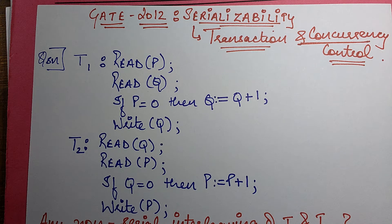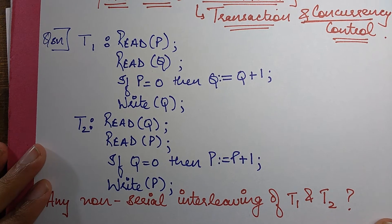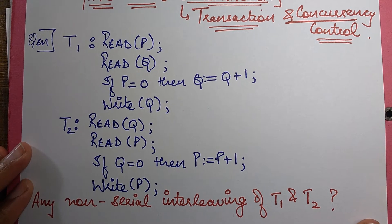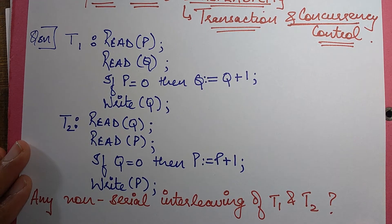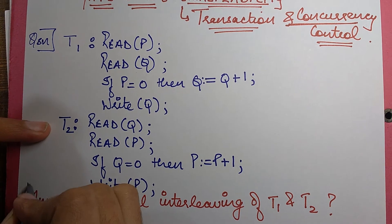What the question next states is: any non-serial interleaving of T1 and T2 — what does it do? They then give various options: whether it is serializable, non-serializable, conflict serializable, etc. The point is we need to focus on this very statement.